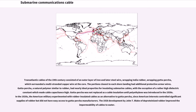Transatlantic cables of the 19th century consisted of an outer layer of iron and later steel wire, wrapping India rubber, wrapping gutta percha, which surrounded a multi-stranded copper wire at the core. The portions closest to each shore landing had additional protective armor wires. Gutta percha, a natural polymer similar to rubber, had nearly ideal properties for insulating submarine cables, with the exception of a rather high dielectric constant which made cable capacitance high. Gutta percha was not replaced as a cable insulation until polyethylene was introduced in the 1930s. The 1926 development by John T. Blake of deproteinized rubber improved the impermeability of cables to water.